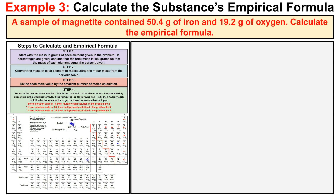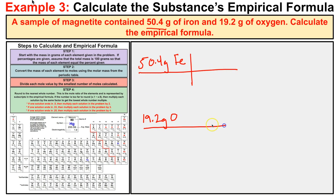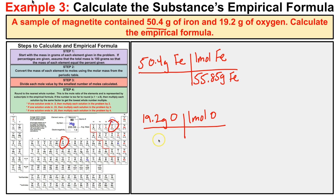In this third and final example, a sample of magnetite contained 50.4 grams of iron and 19.2 grams of oxygen. Step one: we have our masses — 50.4 g of iron and 19.2 g of oxygen. Step two: one mole of iron is 55.85 grams and one mole of oxygen is 16.00 grams.